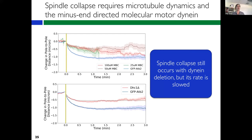When we inhibit microtubule dynamics with the drug MBC, we see slower collapse over time — at all concentrations tried, we still see some collapse toward each other when dynamics are perturbed enough to not completely eliminate the spindle. We then looked at minus-end-directed motors that might be responsible, and we found that dynein seems to be at least one contributor. However, we still see some collapse in cells depleted of dynein, suggesting there may be additional motors involved beyond dynein.